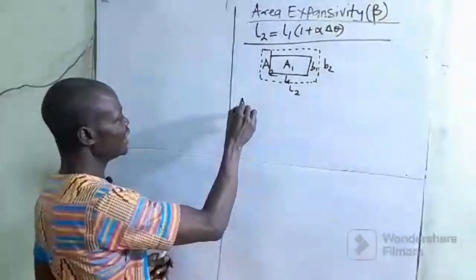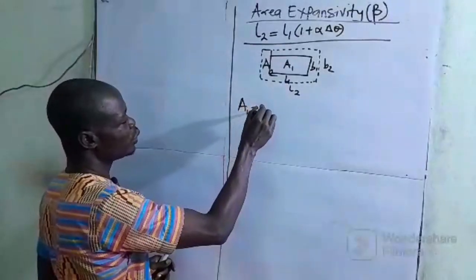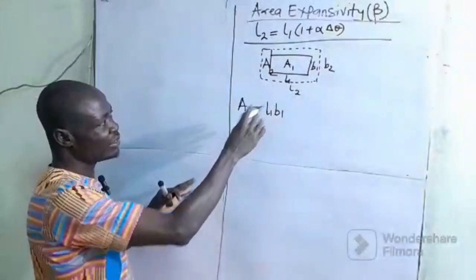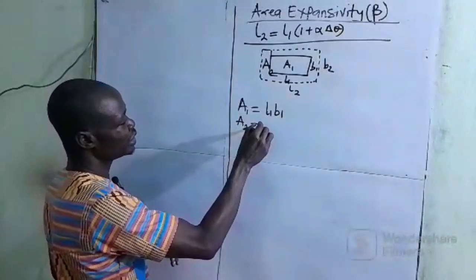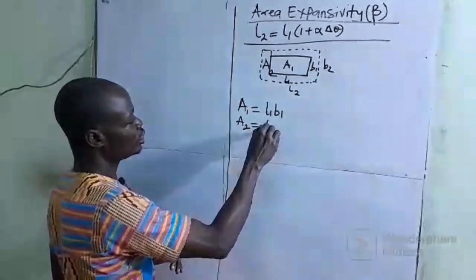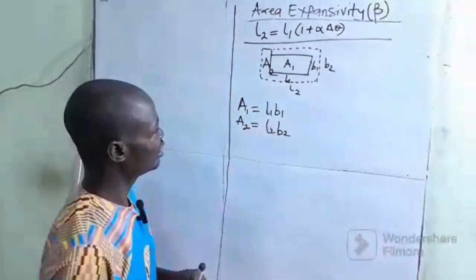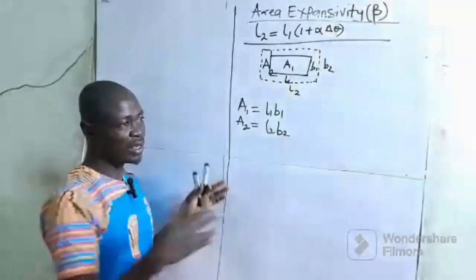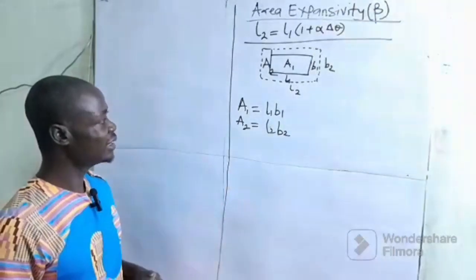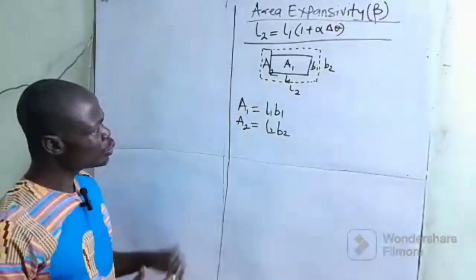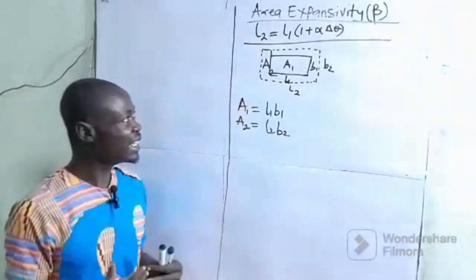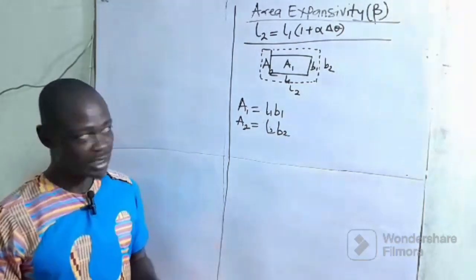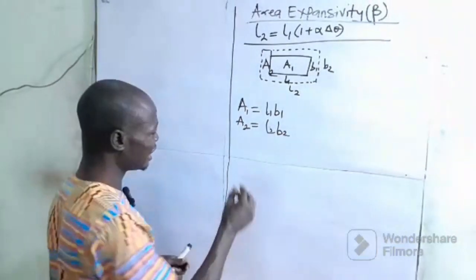From the area of a rectangle, we know that A1 is going to be L1 times B1 originally. When we heat it, we are going to have A2 which is equal to L2 multiplied by B2. This is the original area before heating, and this is the final area after heating. We are simply saying that the area expansivity of a material is the increase in area per unit area per unit temperature change.